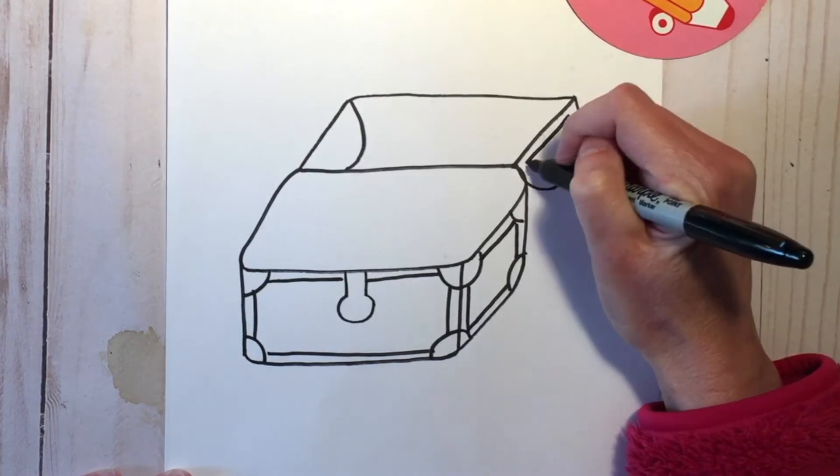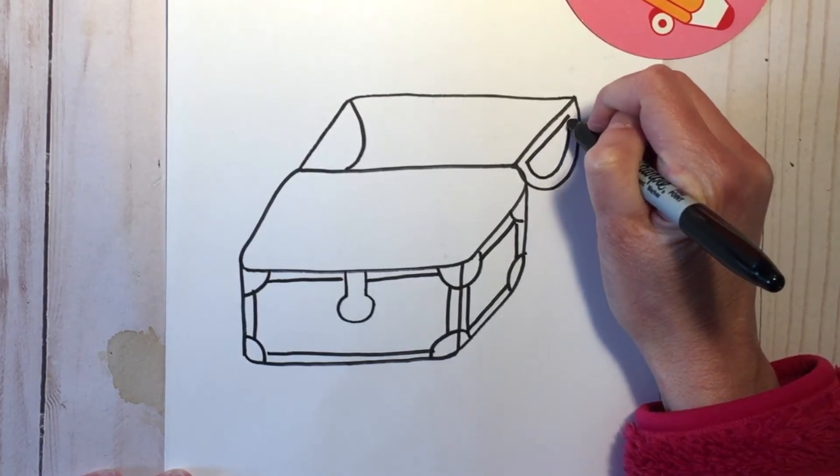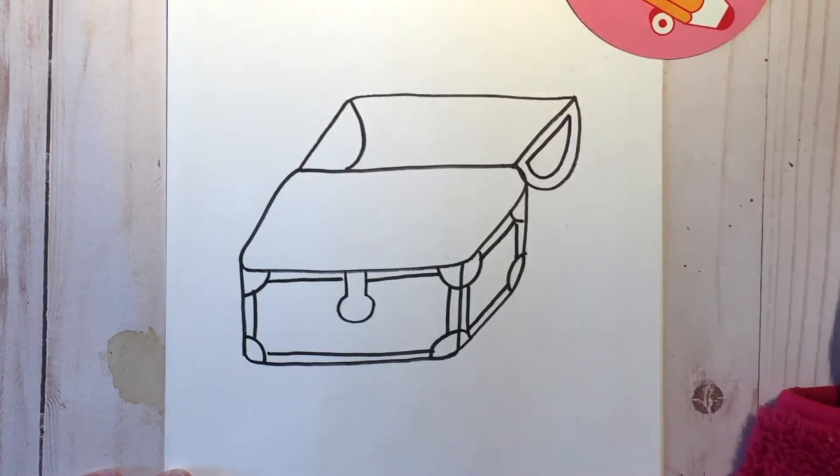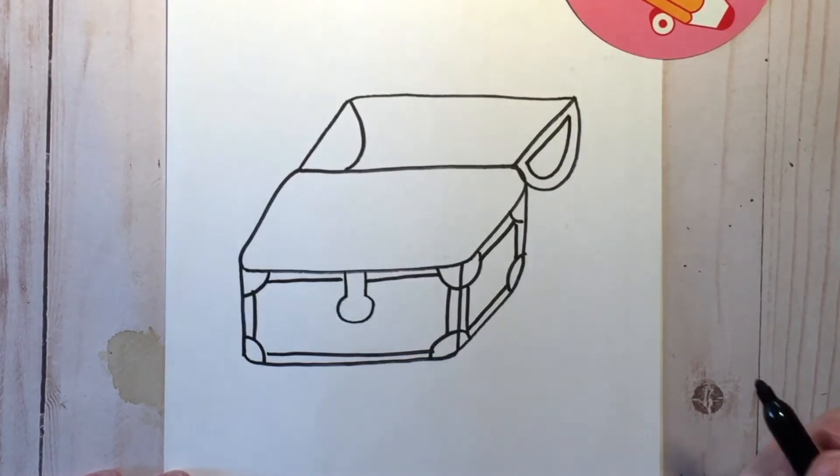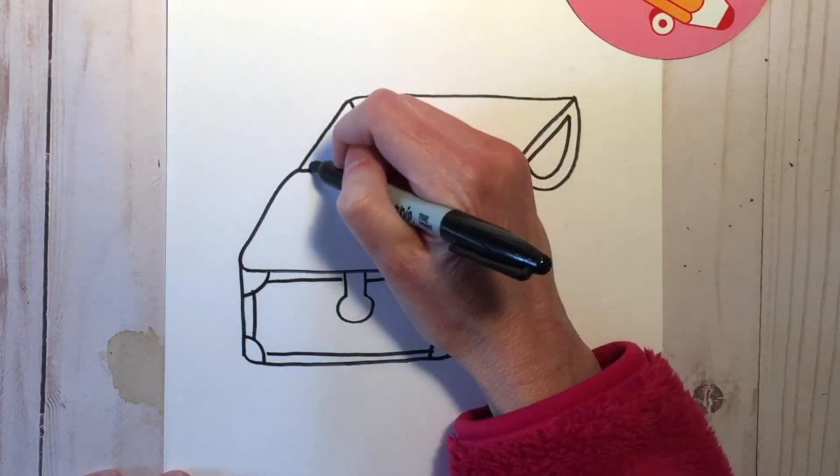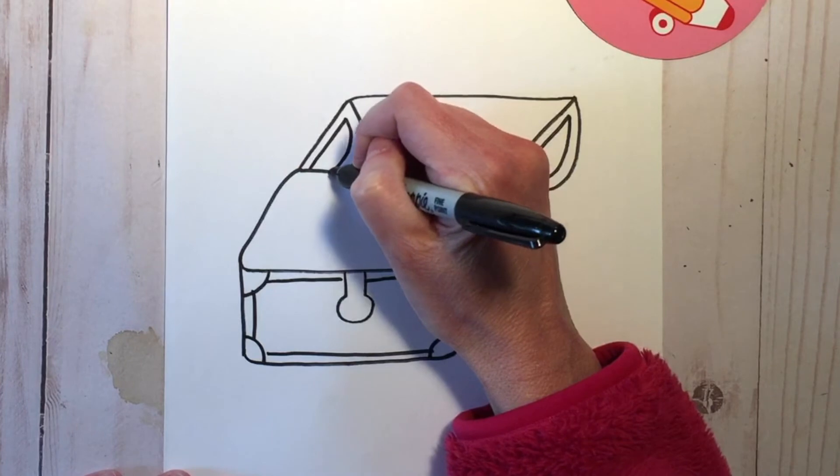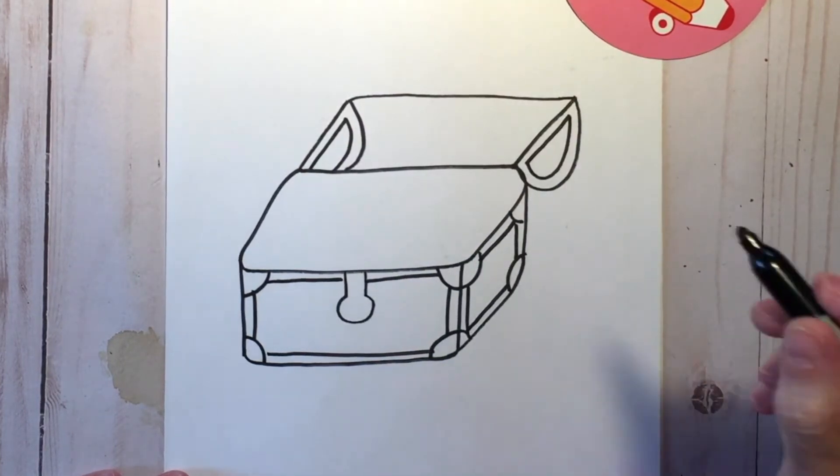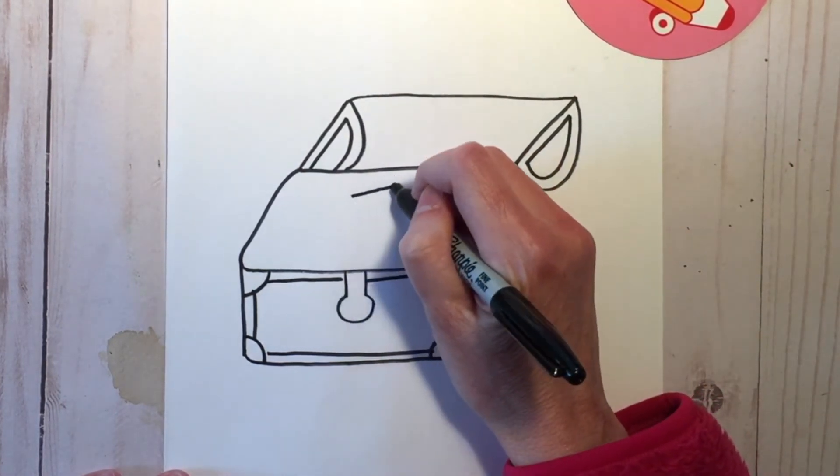Now you're going to duplicate that shape on the inside. And do the same in here. But part of it you're not going to see because it's behind the back of the chest. All right, now we need to add some things to our chest.